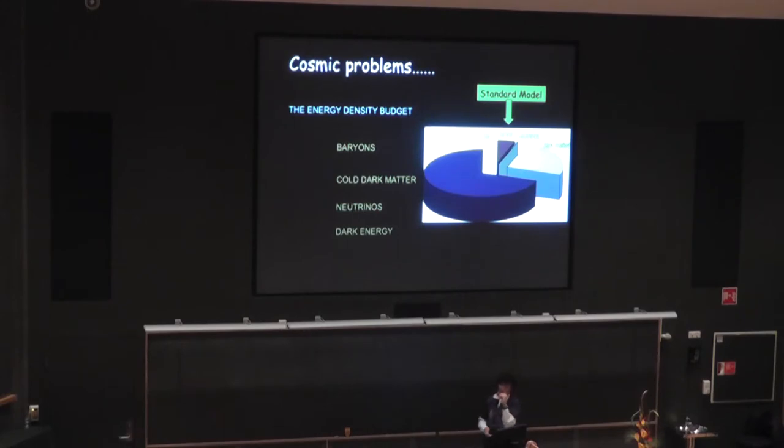the small piece of cake is actually around 4% of the whole cake, which is matter as we know it today. So matter made of protons, neutrons, electrons.